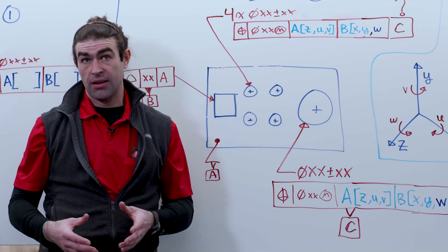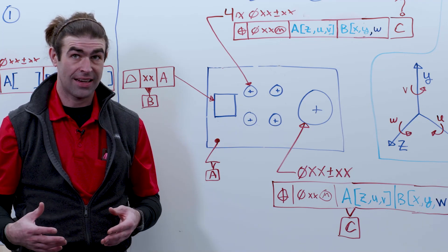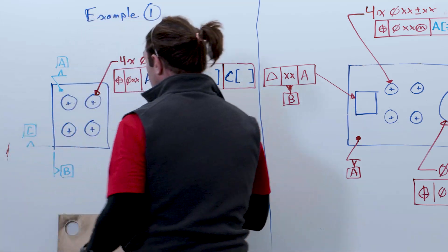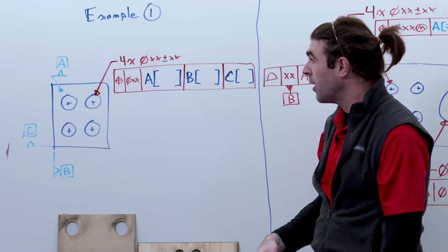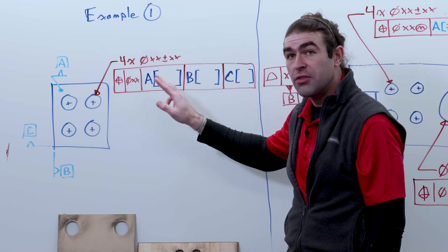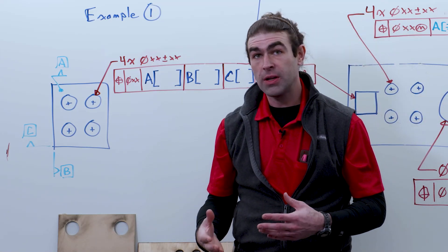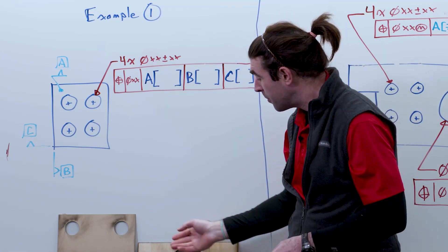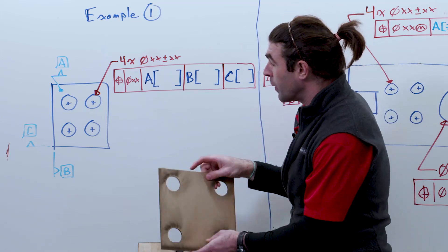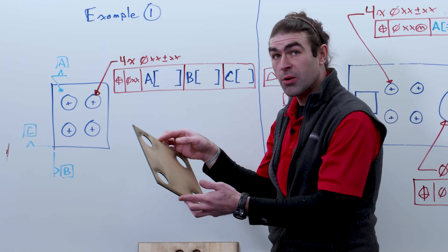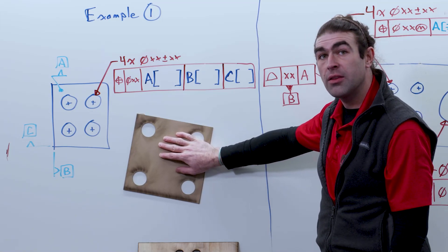Whenever we're inspecting for location, all of the degrees of freedom need to be taken away to get an accurate measurement. Here's an example — a simple block with three planar datums on the sides, a pretty typical setup. We've got four holes positioned to A, B, and C. Let's take a look at what degrees of freedom get taken away when we set up to inspect. Datum A is the largest surface — I'll choose this side of the part.